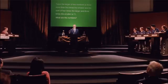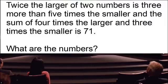The first question in the math competition is up on the screen. I'm going to enlarge this question. Twice the larger of two numbers is three more than five times the smaller. And the sum of four times the larger and three times the smaller is 71. What are the numbers?